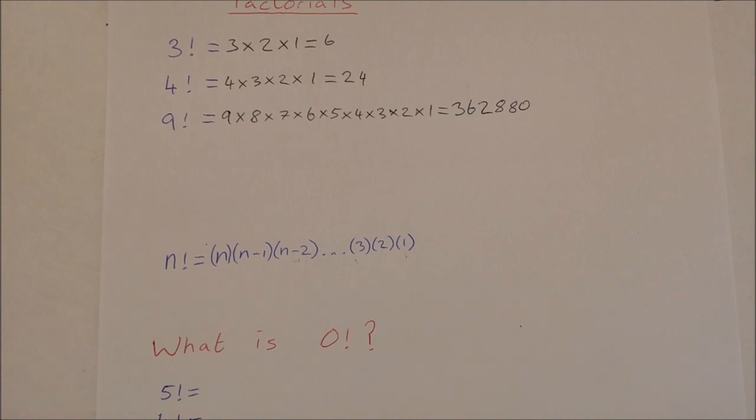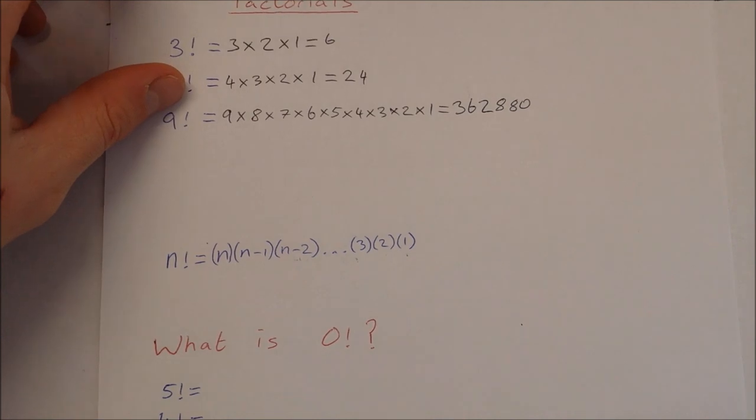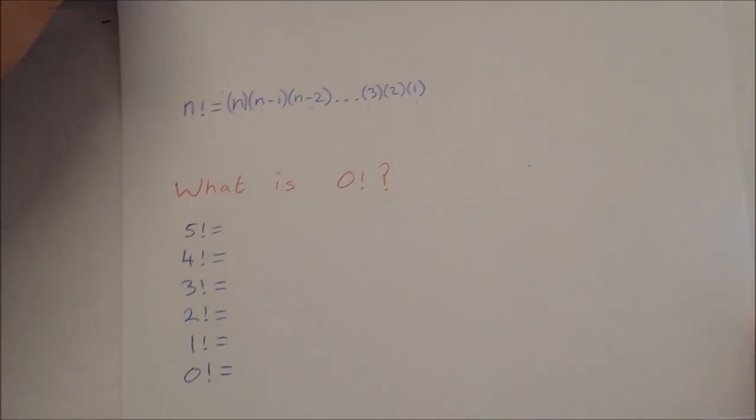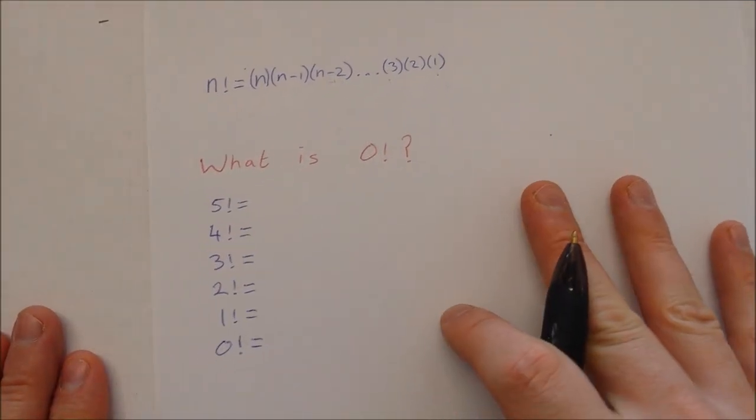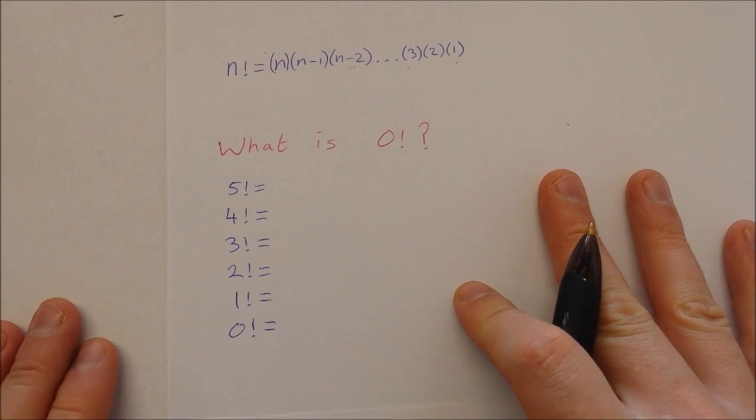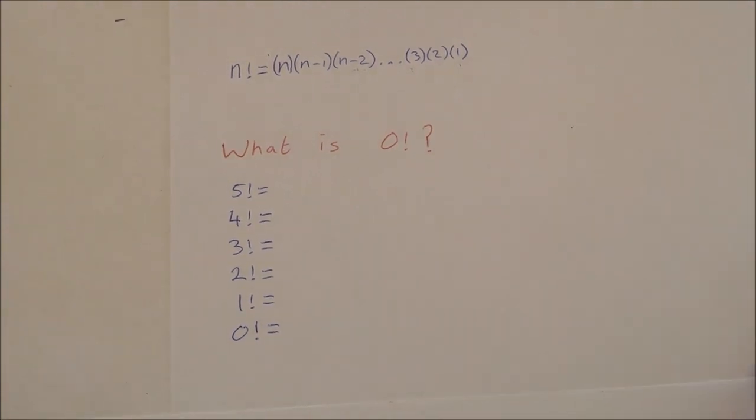But we do define 0 factorial, and here is how we define it at the moment. You might think that 0 factorial is 0, but let's have a look and see what it actually is.